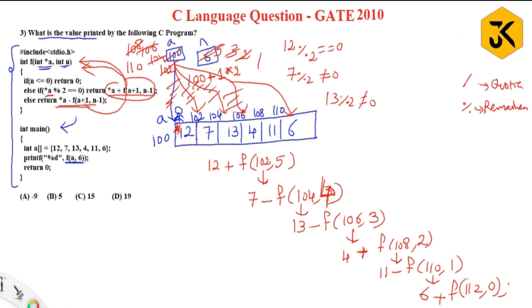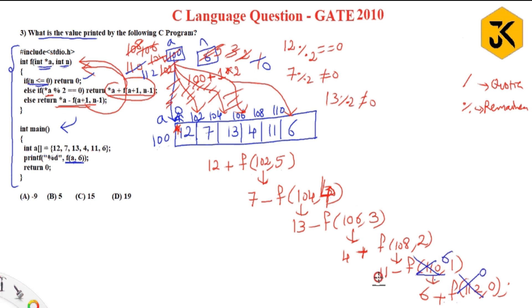Now f(112, 0) is called. n is 0, a is 112. Is n <= 0? Yes, this condition is true, so it returns 0. This entire call is replaced with 0. Substituting back: 6 + 0 = 6. Then 11 - 6 = 5. Then 4 + 5 = 9. Then 13 - 9 = 4. Then 7 - 4 = 3. All recursive calls are now complete.